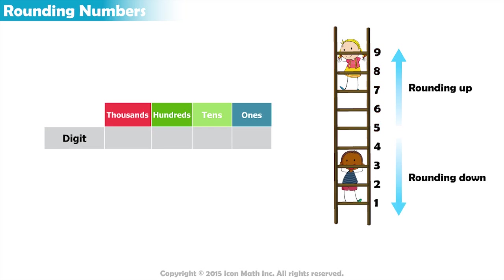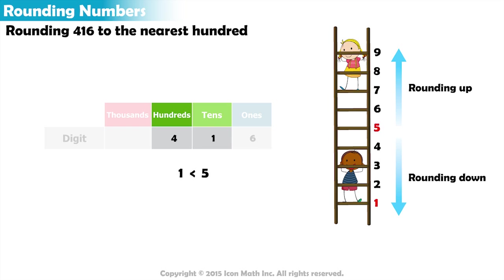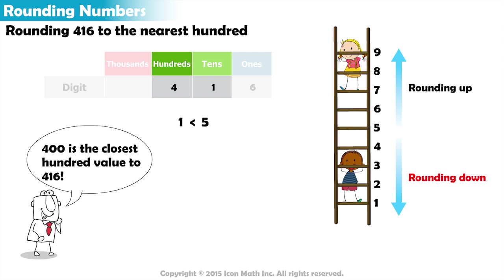For example, if we want to round 416 to the nearest 100, we look at the digit in the hundreds place and the digit to its right. We have 4 in the hundreds place and 1 in the tens place. 1 is less than 5, so we round the number down. The closest 100 value smaller than 416 is 400, so we round the number to 400.